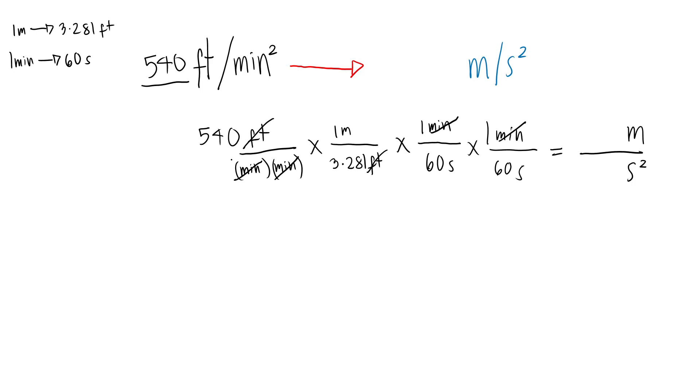So let's multiply 540 times 1 times 1 times 1, and then divide by 3.281 divided by 60 divided by 60. The answer for that is 0.046. So 540 feet per minute squared equals 0.046 meter per second squared. So that's it guys.